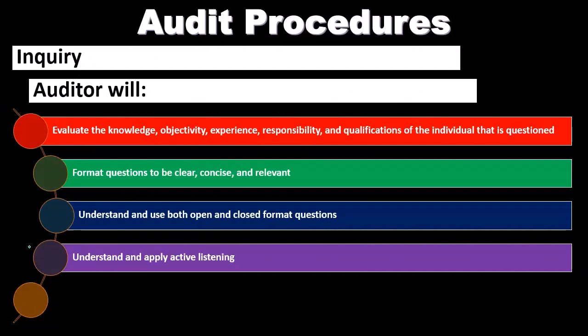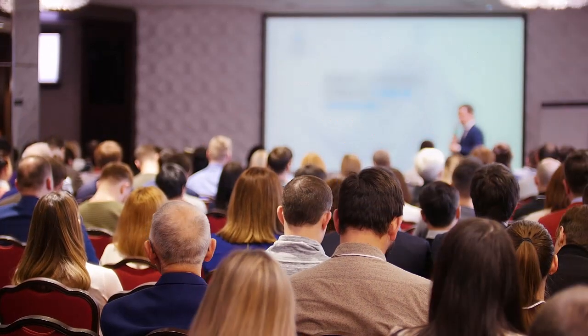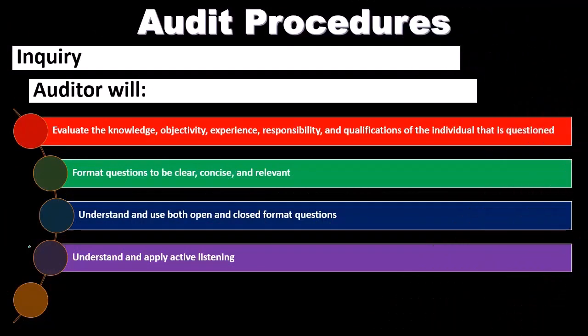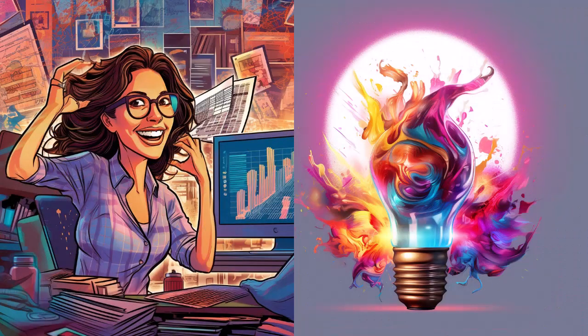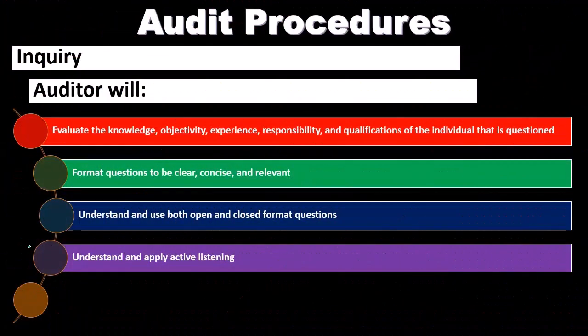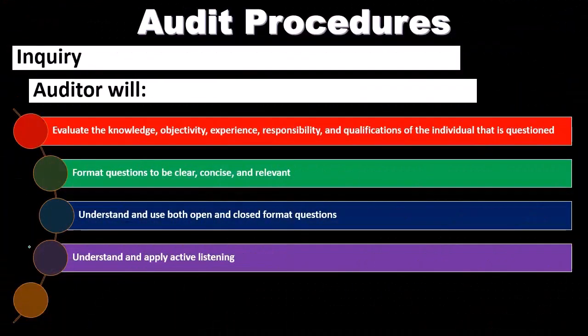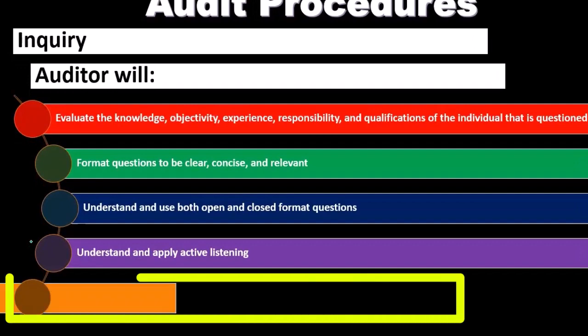We should also understand and apply active listening. Active listening can involve repeating back what the individual is saying. If you ask about the approval process and they go through a list of steps, as you document the information you repeat it back: 'Is this my interpretation of what you said — you do A, B, C, and D — is that correct?' In that format, we build rapport while also making sure we fully understand what was said, so we can document the inquiry correctly.